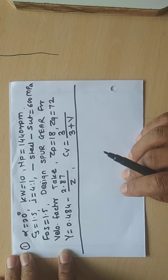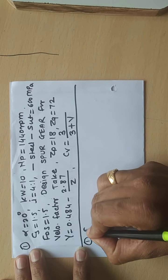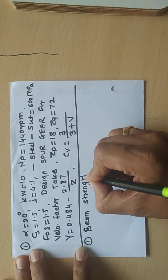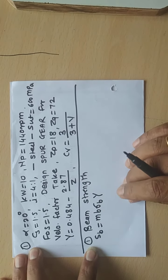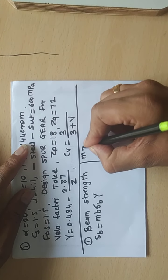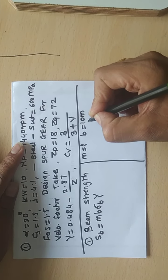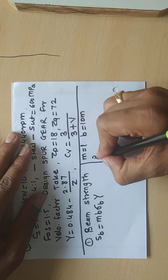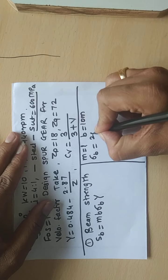There are four steps to solve this. First step is beam strength. SB is equal to M·B·σB·Y for the spur gear. Here M is unknown, B is taken as 10·M — it varies from 8M to 12M, so we take the intermediate value 10M.